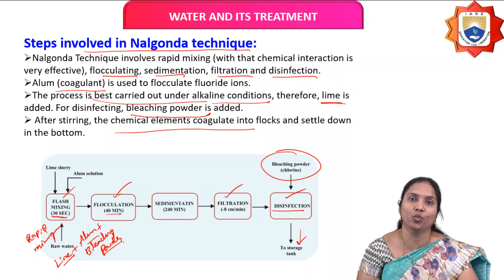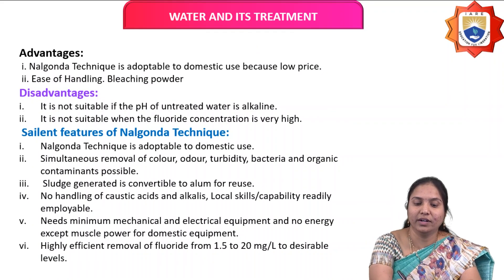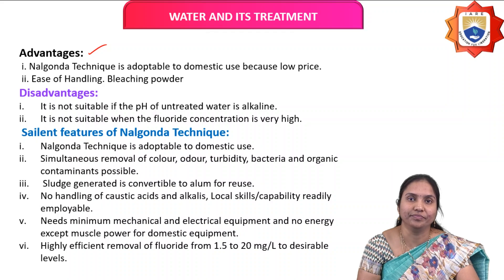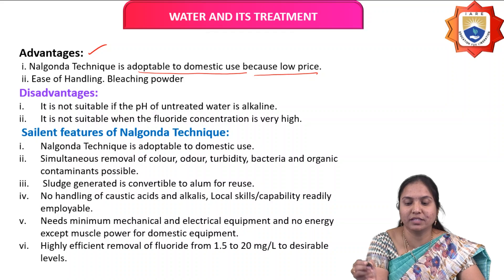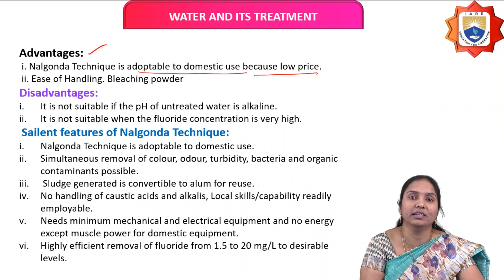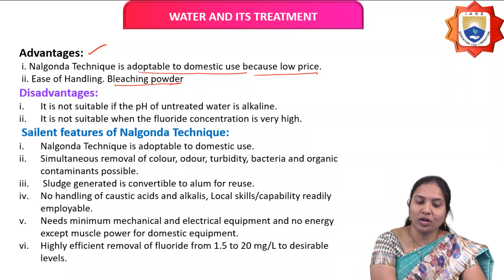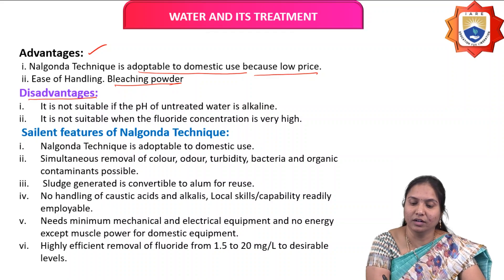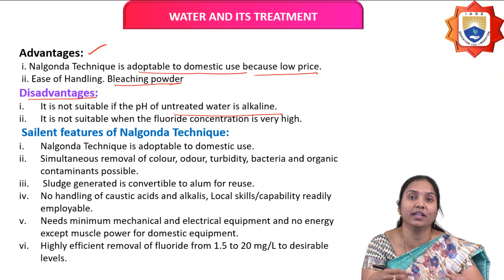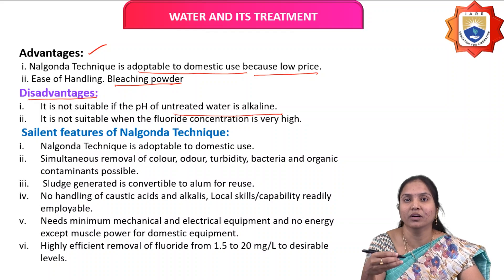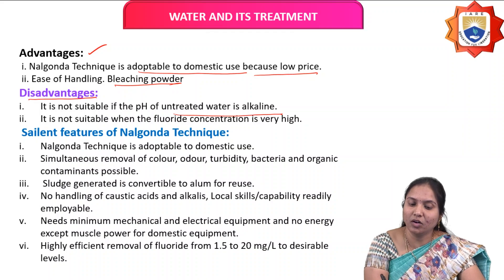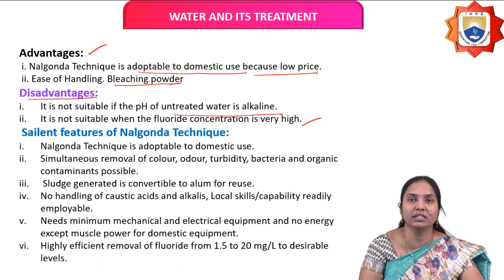The advantages of the Nalgonda technique are: it is adaptable to domestic use due to its low cost and ease of handling; bleaching powder is available at low cost. The disadvantages are: it is not suitable if the pH of untreated water is not alkaline (it is less effective under acidic or neutral conditions), and it is not suitable when fluoride concentration is very high.